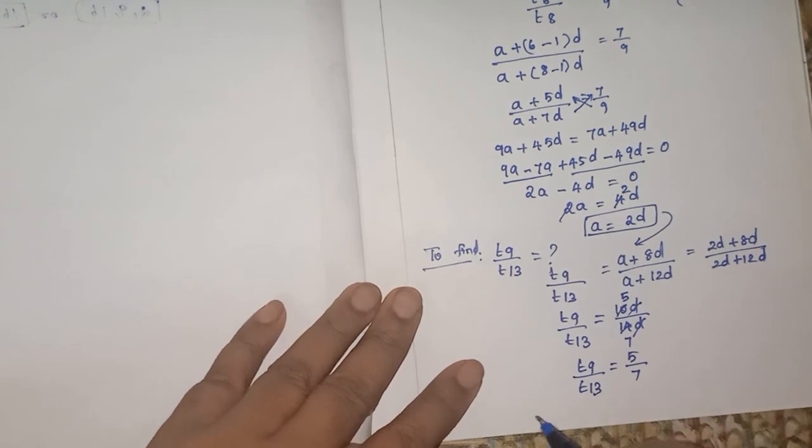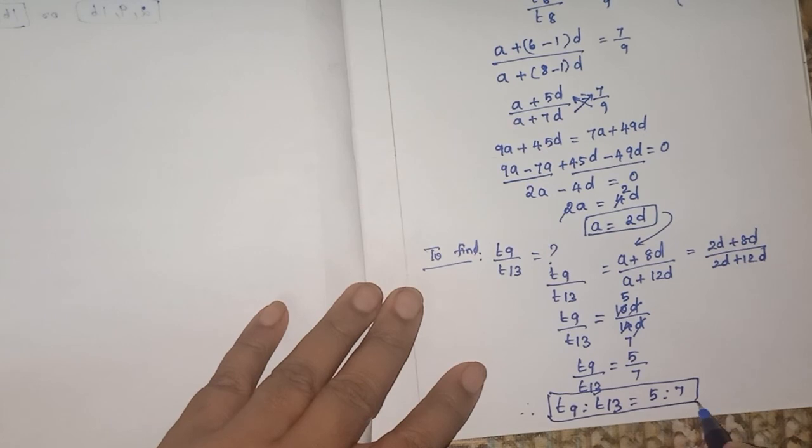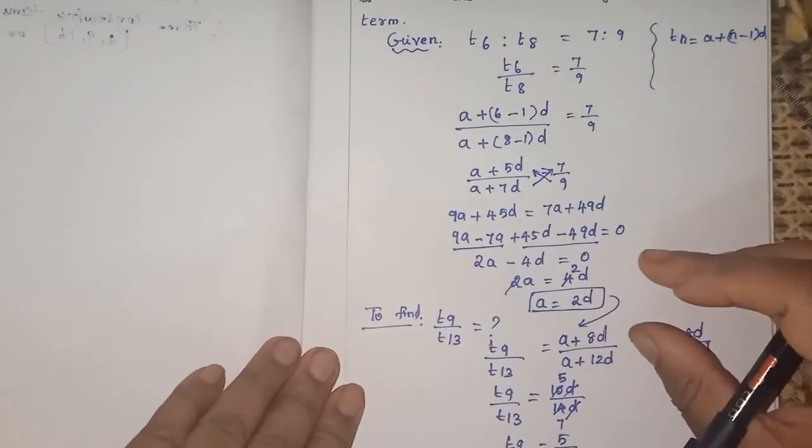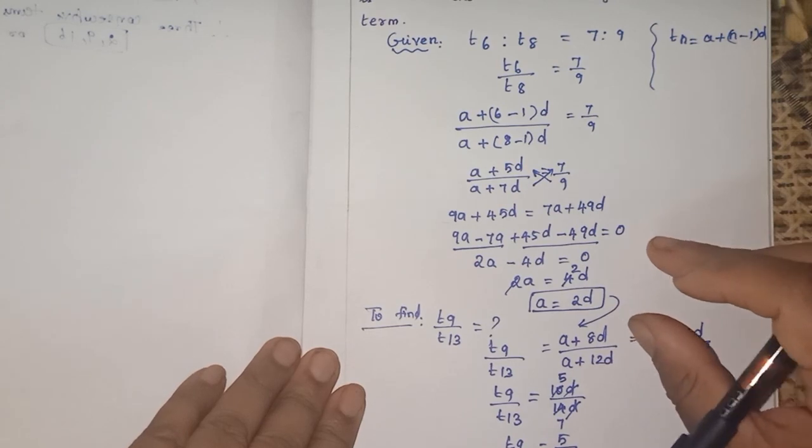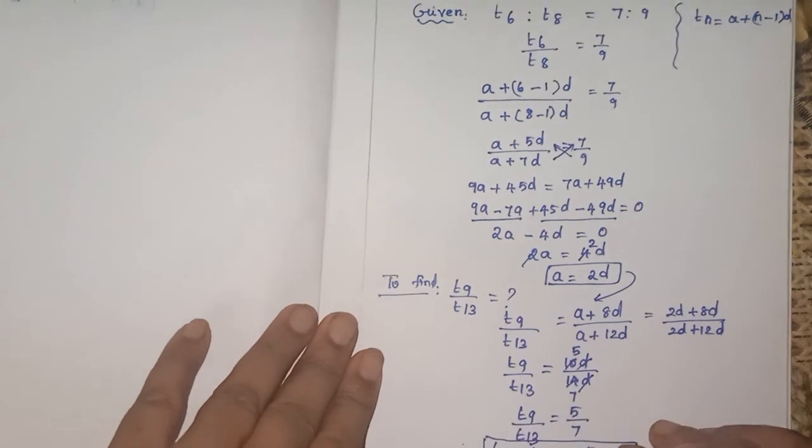So how the ratios are, how will you write the answer? Therefore, T9 is to T13 is equal to 5 is to 7. This is very important question. So from the given hint, you are concluding some data out of it, so then you are substituting in what is asked in the question.